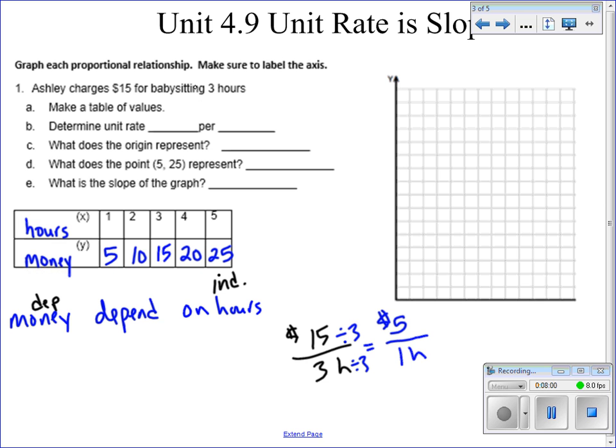So we were able to use the rate that they gave us to find out that it was $5 per one hour to be able to also fill in this table and make the table. So like we talked about in the last video, this is going to be a linear progression, so it's going to have that constant rate of change.